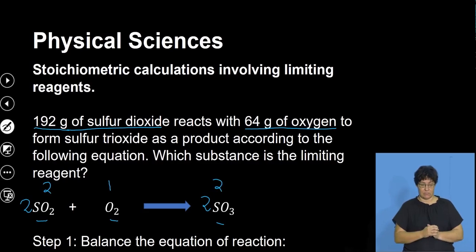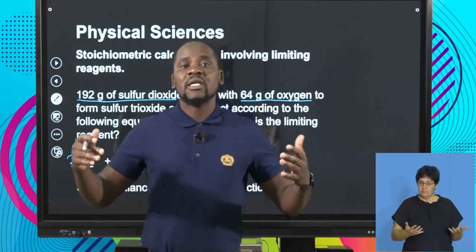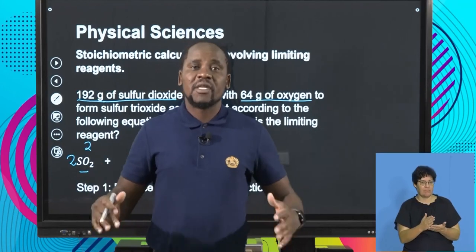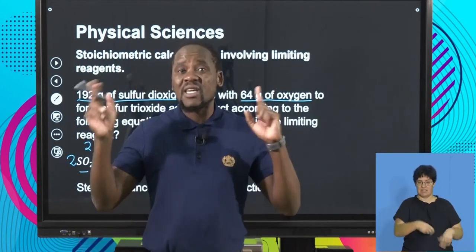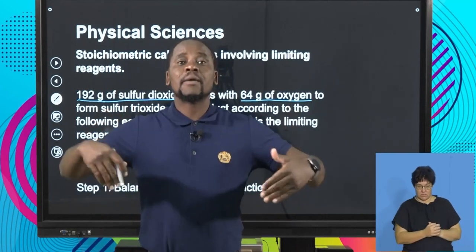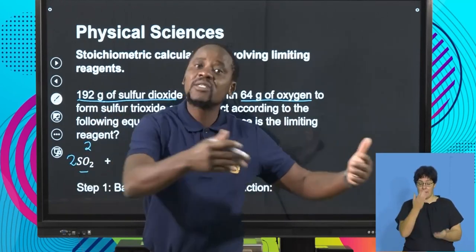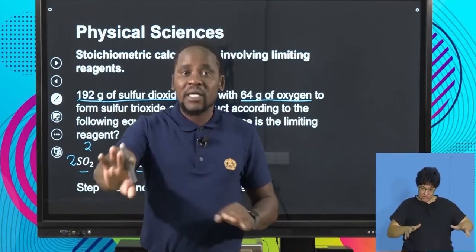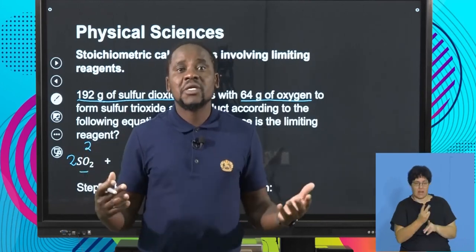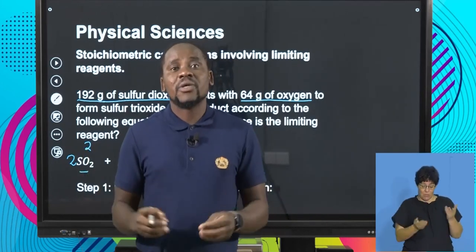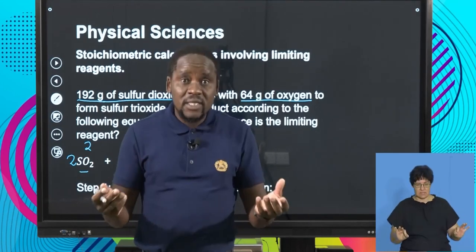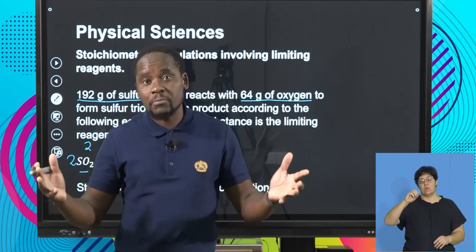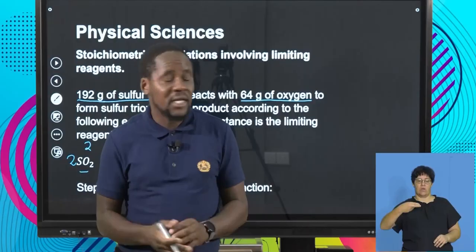We've taken care of the first part. Note that sometimes the equation may already be given in balanced form, so you don't have to go through this. Pay careful attention — if it says a balanced equation is given, that part is sorted. But if it just says an equation, verify whether it is balanced to arrive at the stoichiometric ratio in which the substances participate in the chemical change.